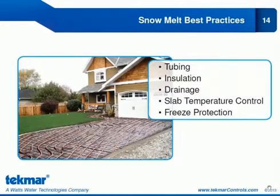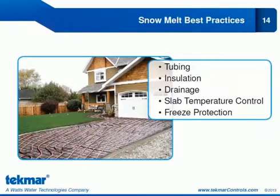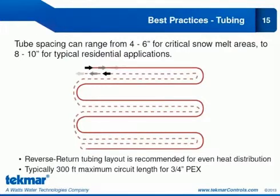We'll look at some of the best practices associated with snow melting, covering tubing, insulation, drainage, slab temperature control, and freeze protection. For tubing, tube spacing can range from 4 to 6 inches for critical snow melt areas, to 8 to 10 inches for typical residential applications. A reverse return layout is recommended for even heat distribution. The typical maximum circuit length for 3/4 inch PEX is 300 feet — it's not advised to exceed this.